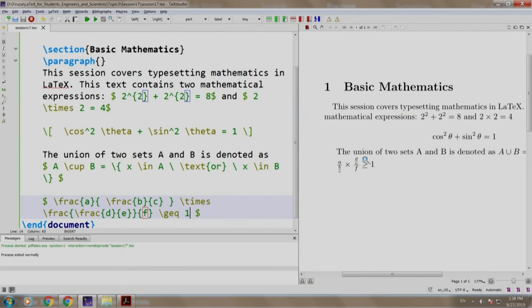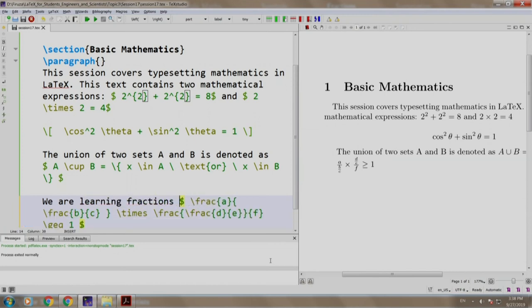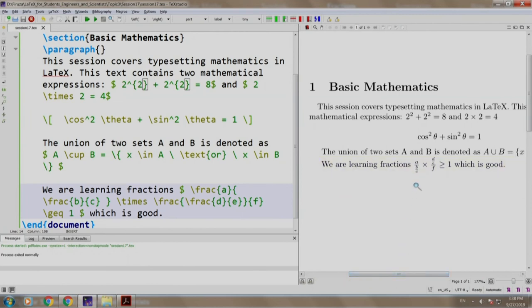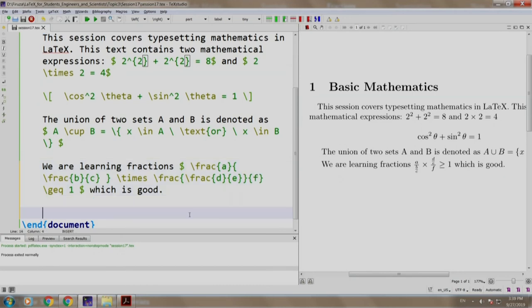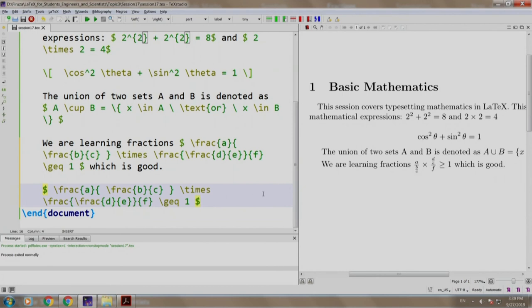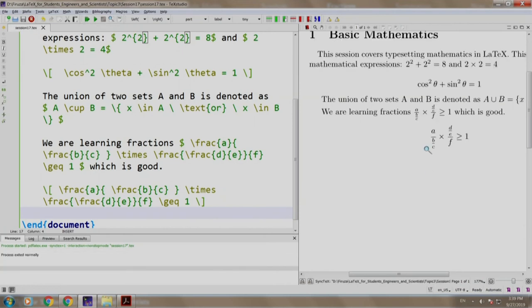Let us add some random text before this. We are learning fractions and after the mathematics we write which is good. Let us build and run. Now we have text followed by mathematical expression followed by another text. Let us display the same fraction on a different line. Basically we copy this, paste it here and instead of dollar we write slash box bracket and we end the slash box bracket over here. Build and run. There you go. This is displayed on another line with a larger font size.